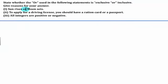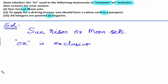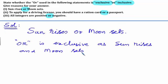In the following statements, the word OR is used. We have to say whether this OR is exclusive or inclusive. The first statement is: sun rises or moon sets. Here, OR is exclusive because both events — sun rises and moon sets — cannot be true simultaneously.